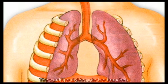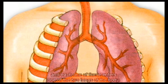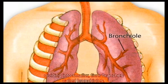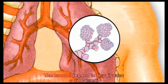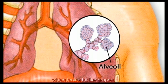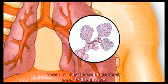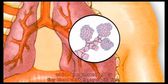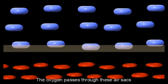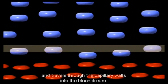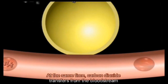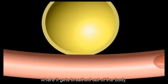The windpipe divides into two branches, and each one enters one of the two lungs. Each branch resembles the limbs of a tree dividing into smaller, finer branches called bronchioles. The bronchioles end in tiny air sacs called alveoli, which look a bit like grapes. These structures enable fresh air to reach the air sacs, which are surrounded by tiny blood vessels or capillaries. Oxygen passes through the air sacs and travels through the capillary walls into the bloodstream. At the same time, carbon dioxide transfers from the bloodstream into the air sacs, where it gets breathed out of the body.